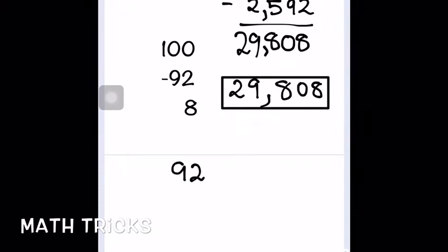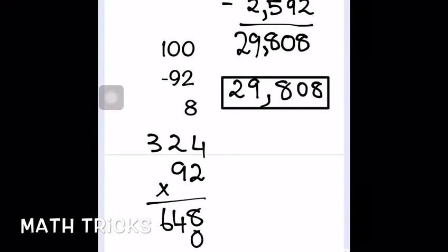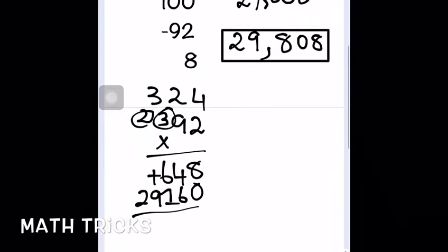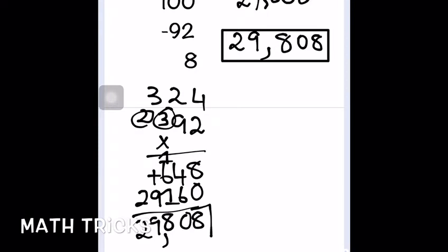Now we're going to check the answer. We're just going to multiply in the normal way. You don't have to check every single time — I'm just doing it to prove that the trick works. When you multiply 324 by 92 the normal way, you get the same answer: 29,808.